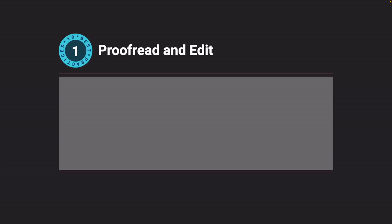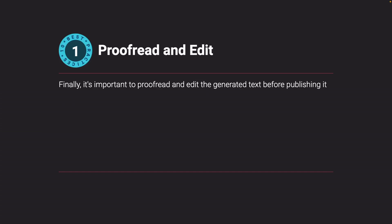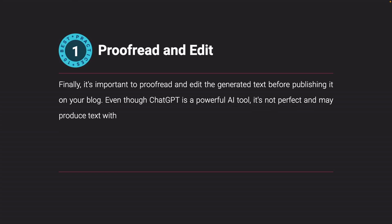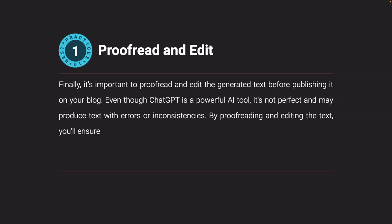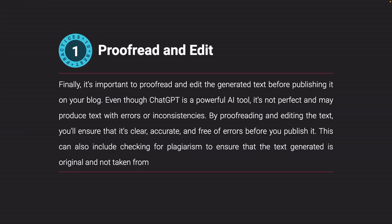Proofread and edit. Finally, it's important to proofread and edit the generated text before publishing it on your blog. Even though ChatGPT is a powerful AI tool, it's not perfect and may produce text with errors or inconsistencies. By proofreading and editing the text, you'll ensure that it's clear, accurate, and free of errors before you publish it. This can also include checking for plagiarism to ensure that the text generated is original and not taken from other sources.